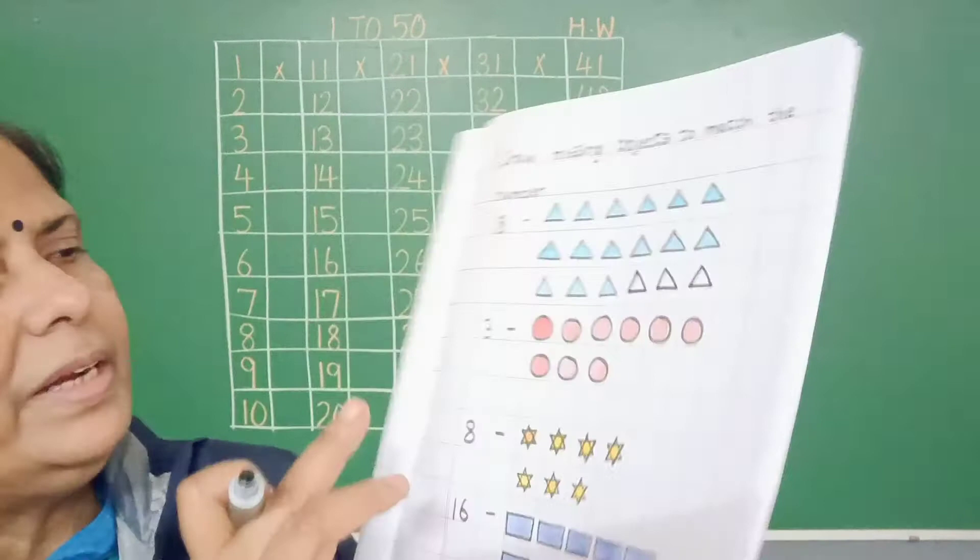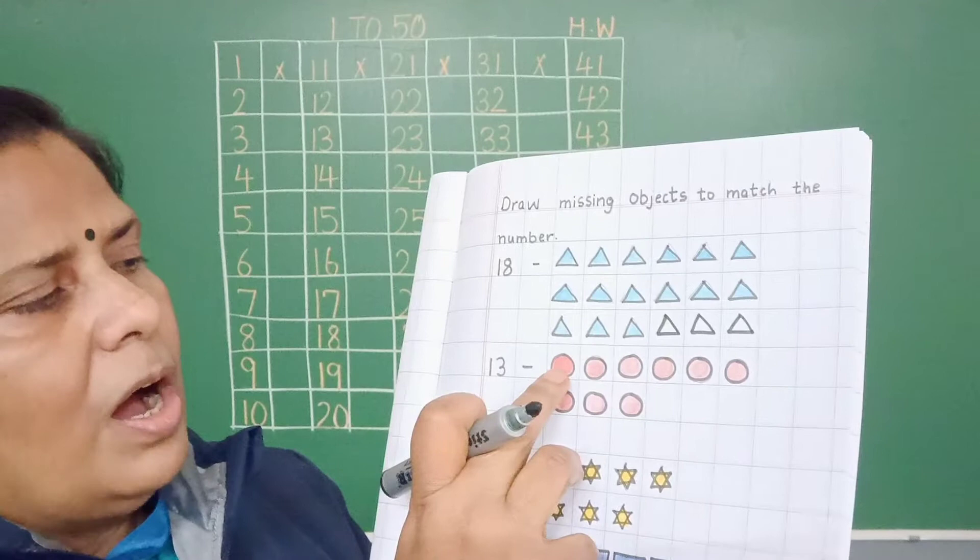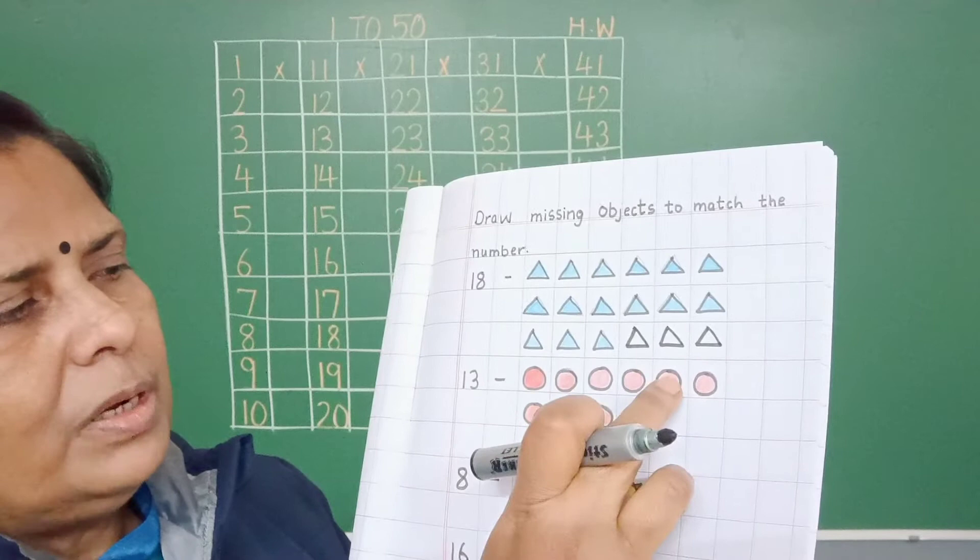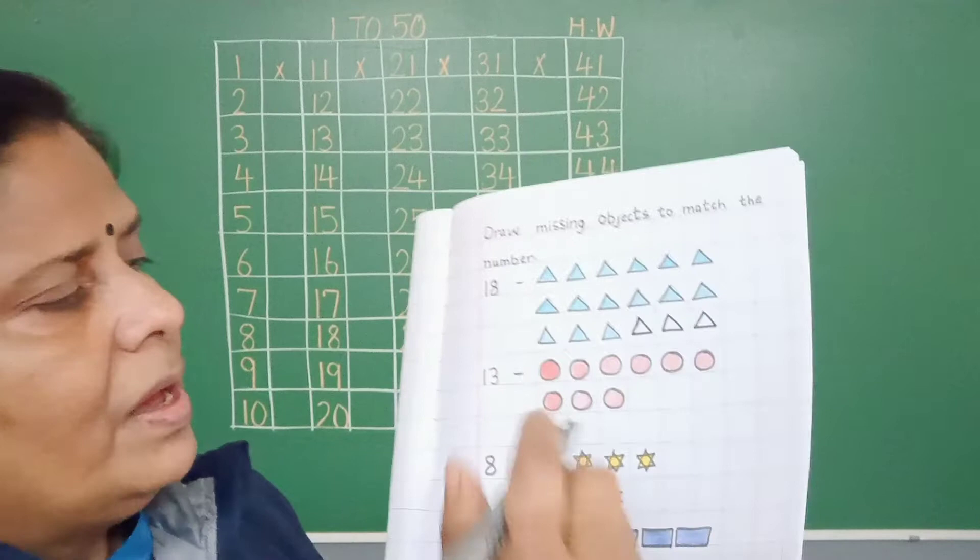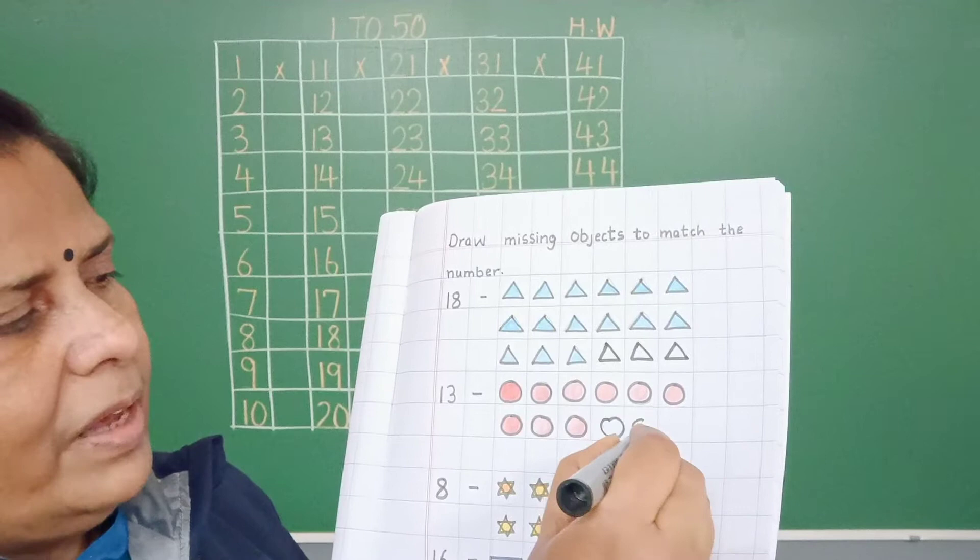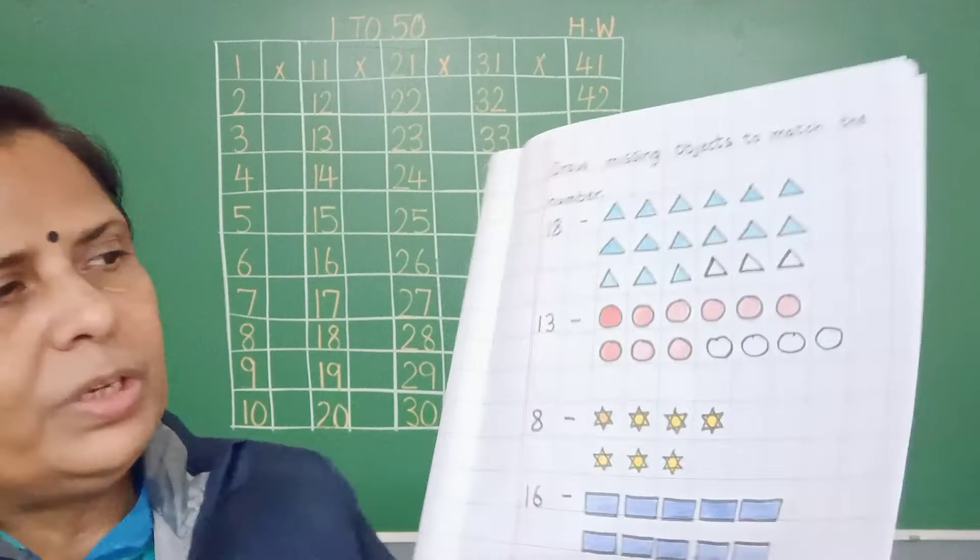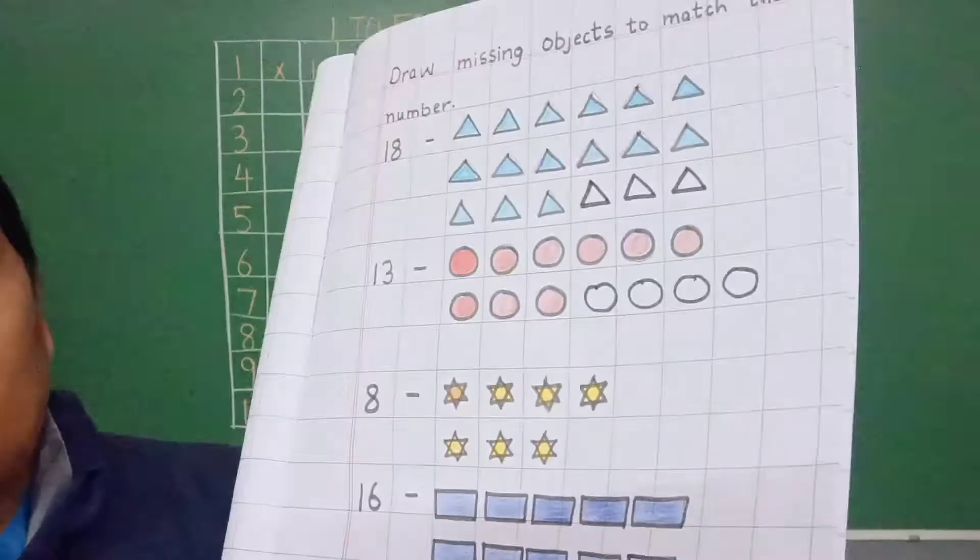Now let's see the circles. Number 13 is there. One, two, three, four, five, six, seven, eight, nine. Now let's see how many circles are coming. Nine, 10, 11, 12, 13.